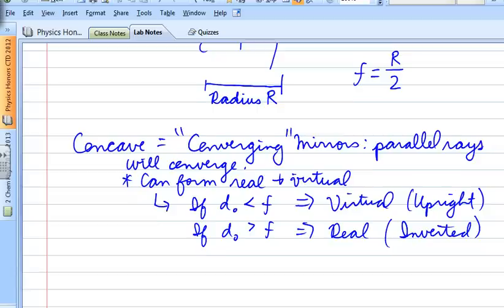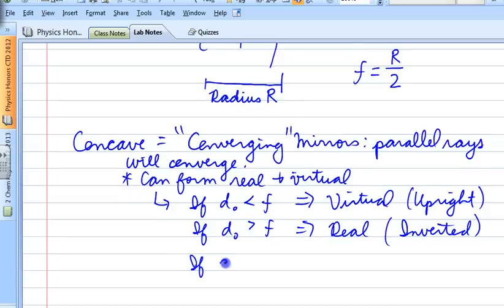Okay, now something kind of special happens when do equals f. So this is no image formed. And we'll talk a little bit more about this when we look at our ray diagrams a bit later.